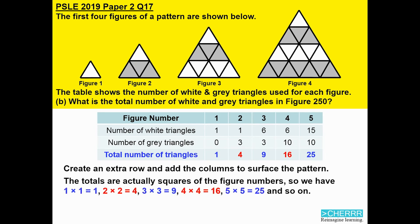So for figure 1, you actually have 1 times 1 to get 1. Figure 2, you have 2 times 2 to get 4. Figure 3, you get 3 times 3 to get 9. Figure 4, 4 times 4, you get 16. Figure 5, 5 times 5, you get 25. And it so happens that the numbers you use to multiply also correspond with the figure number.